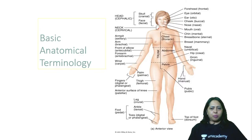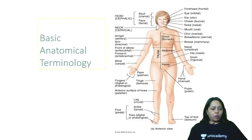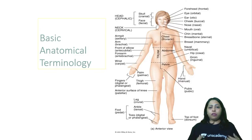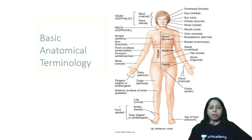Here you can see the human body standing in the anatomical position — she is standing straight, looking forward, facing forward, palms are facing forward, and feet are facing forward. Everything is looking forward. This is the anatomical position. Let's write it down: anatomical position.